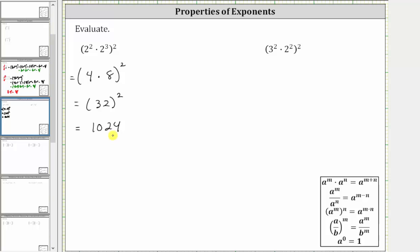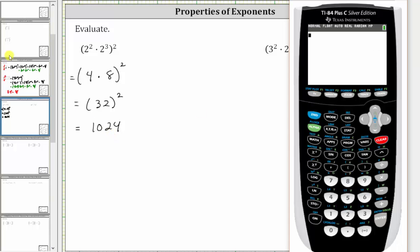Let's verify this on the calculator. We enter the original expression: open parenthesis, two squared times two raised to the power of three, close parenthesis, squared, enter. And notice we do get 1024.